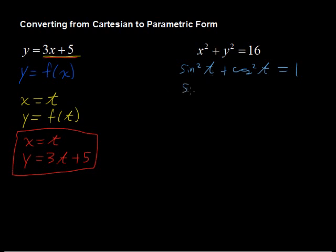Now I'm going to rewrite this as sine of t quantity squared because that's really what this shorthand way of writing sine squared is. Cosine of t quantity squared equals 1, and that's just going to help us see this a little bit easier.